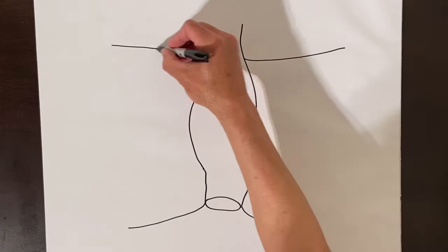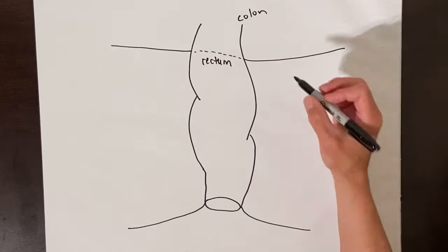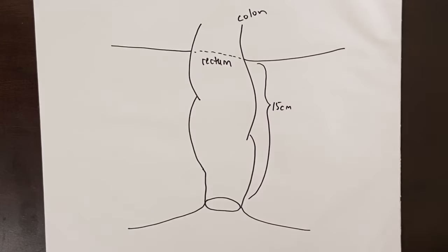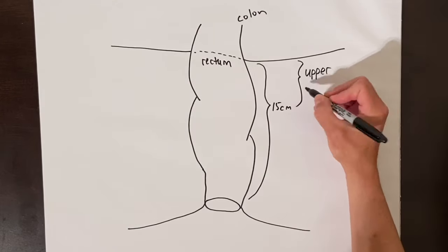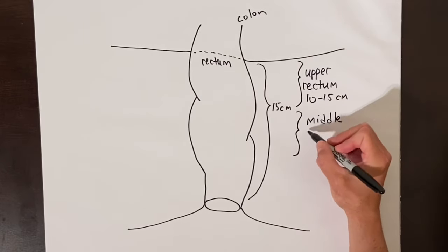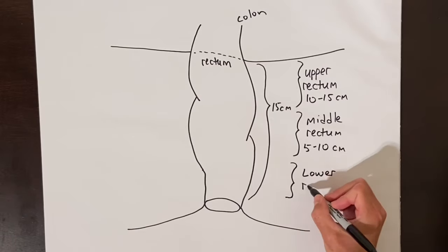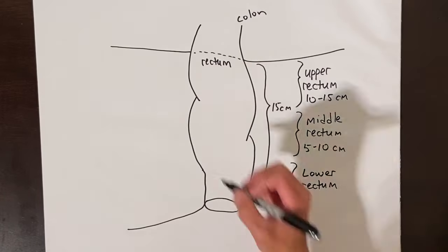The rectum is usually around 15 centimeters from the anal opening, although the distance varies on how tall a person is. The rectum is split into the upper rectum, which is 10 to 15 centimeters from the anal opening, the middle rectum, which is 5 to 10 centimeters from the anal opening, and the lower rectum, which is the lowest part just above the anus.